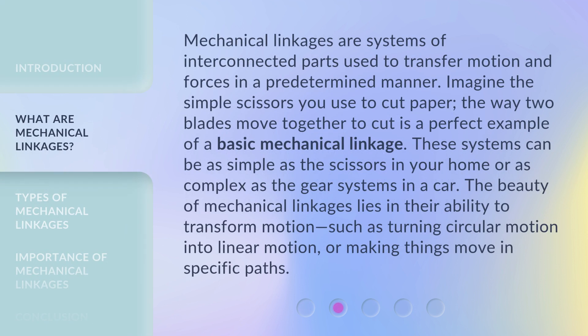Mechanical linkages are systems of interconnected parts used to transfer motion and forces in a predetermined manner. Imagine the simple scissors you use to cut paper — the way two blades move together to cut is a perfect example of a basic mechanical linkage. These systems can be as simple as scissors or as complex as the gear systems in a car. The beauty of mechanical linkages lies in their ability to transform motion, such as turning circular motion into linear motion, or making things move in specific paths.